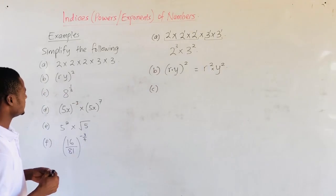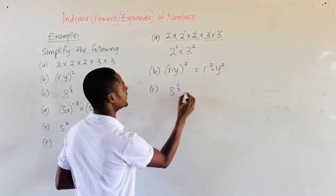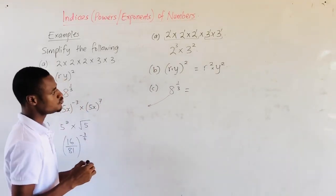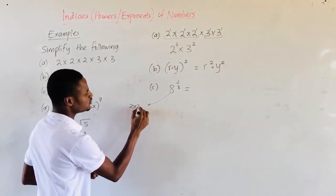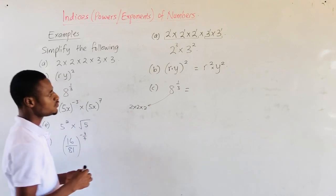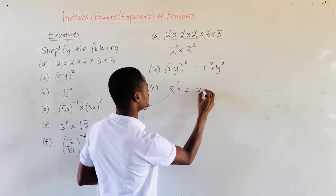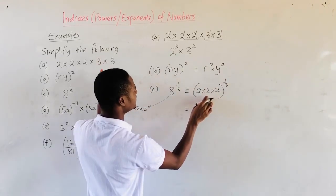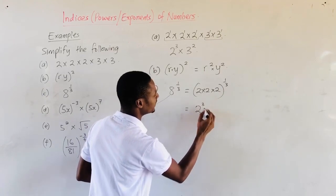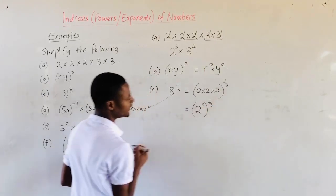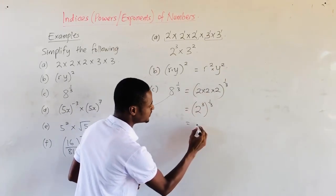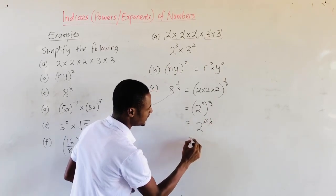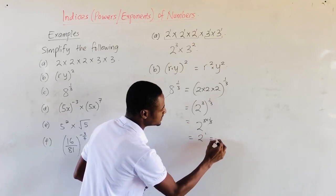Our third question C: 8 raised to the power 1 over 3. Note that 8 can be written as 2 times 2 times 2. So we have 2 times 2 times 2 all raised to the power 1 over 3, which from the first law gives us 2 raised to the power 3, all raised to the power 1 over 3. When there is an exponent raised to another exponent, the two exponents multiply. So 3 times 1 over 3 gives us 1, and we get 2 raised to the power 1, which is simply 2.